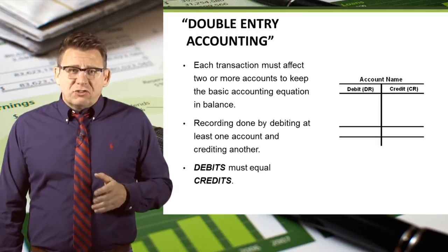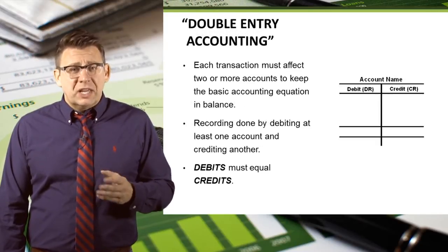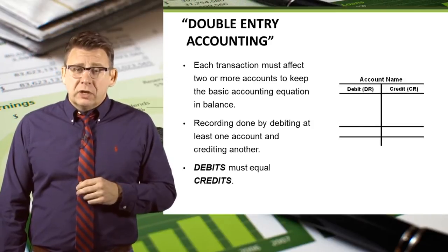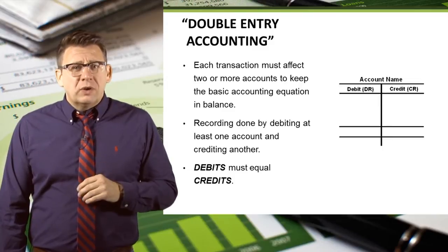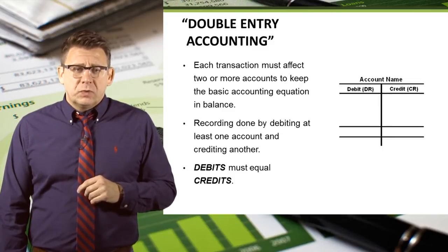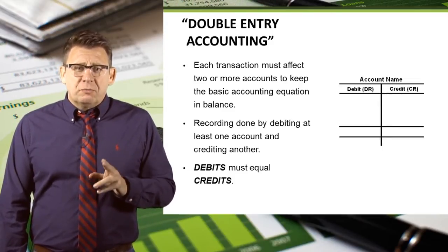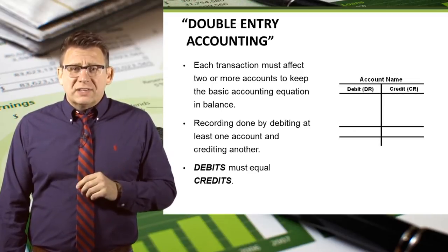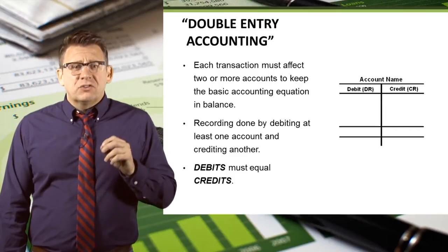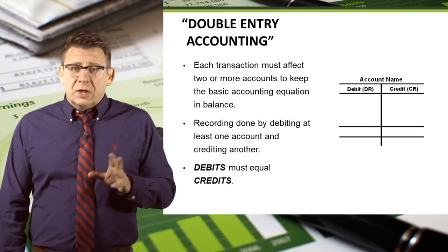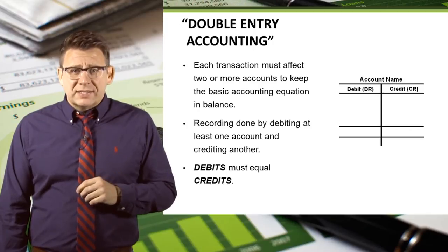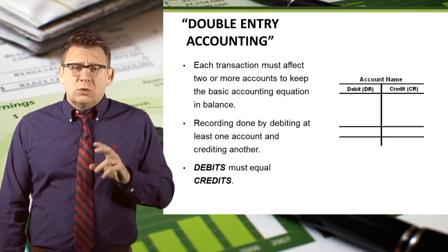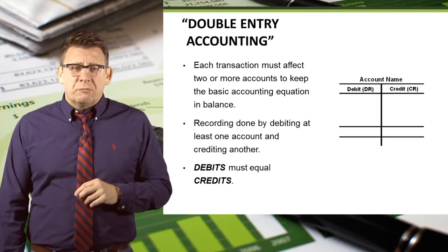Each transaction must affect two or more accounts to keep the accounting equation in balance. This is known as double-entry accounting, so every transaction must include at least two accounts — one account that is debited and one account that is credited. There can be more than two accounts, but there can never be less. And debits must always equal credits, or the accounting equation would be out of balance.